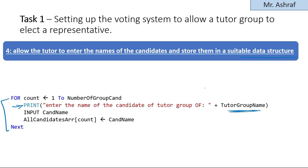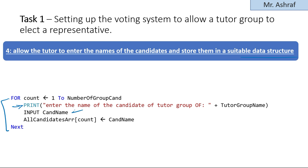Inside the loop, prompting is very important. We PRINT 'Enter the name of the candidate of tutor group' followed by the tutor group name — for example 8B. So the message will say 'Enter the name of the candidate of tutor group 8B' or 8C or 9B, whatever group name was selected at the beginning. Then we use INPUT to store the value in a variable called 'candidate name'.